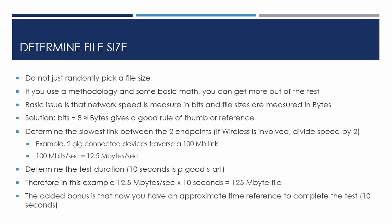We determine the test duration. In this case I'm using 10 seconds - it doesn't have to be, I just like using 10. So if I have 12.5 megabytes per second and I want a 10-second test, that's 125 megabytes. Done - it's that simple. So now you need a 125-megabyte file; it doesn't need to be exact, just around that size. Now I have a time reference - that's the bonus. I know when I do my test it should be about 10 seconds. If it's 11 or 12 seconds, am I going to freak out? No. But if it's 10 minutes, then it's like, what is going on?